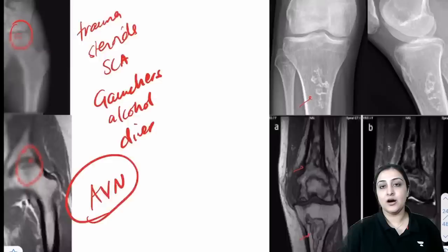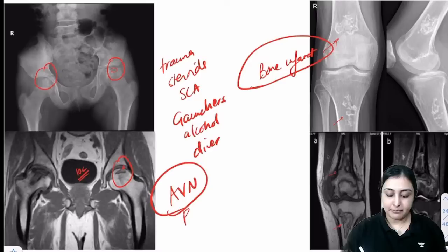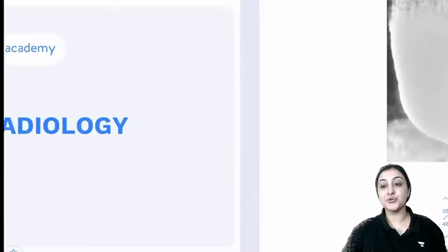Bone infarct: serpiginous (snake-like) opacities within bone — seen in sickle cell bone crisis. Same pathology: in bone = bone infarct; at joint = avascular necrosis; in children = Perthes disease.